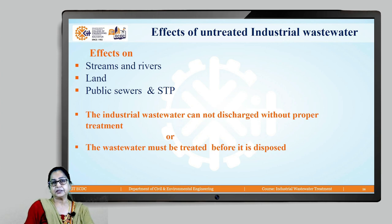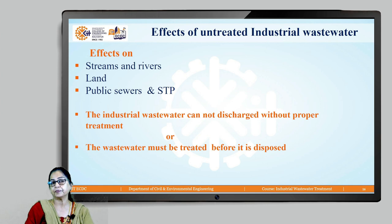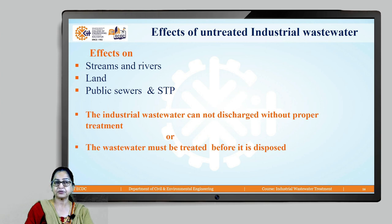If industrial wastewater is not treated and is disposed of into water bodies like streams and rivers, on land for irrigation, or into public sewers and sewage treatment plants, the nature of industrial wastewater is such that it will have very detrimental effects and will destroy the ecology of streams and rivers.